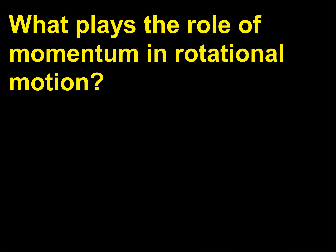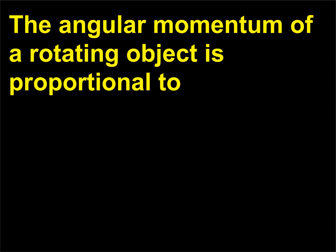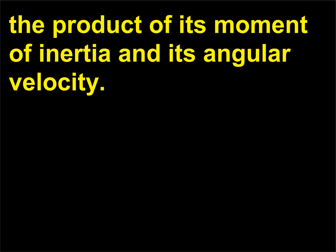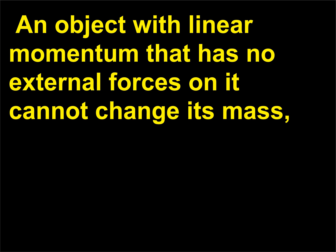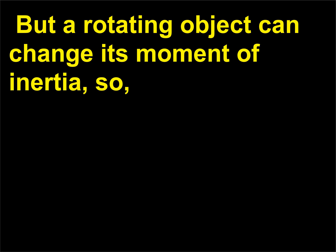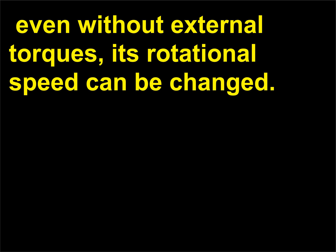What plays the role of momentum in rotational motion? The angular momentum of a rotating object is proportional to the product of its moment of inertia and its angular velocity. If there are no external torques on the object, its angular momentum does not change. An object with linear momentum and no external forces cannot change its mass, so its velocity is constant. But a rotating object can change its moment of inertia, so even without external torques, its rotational speed can be changed.